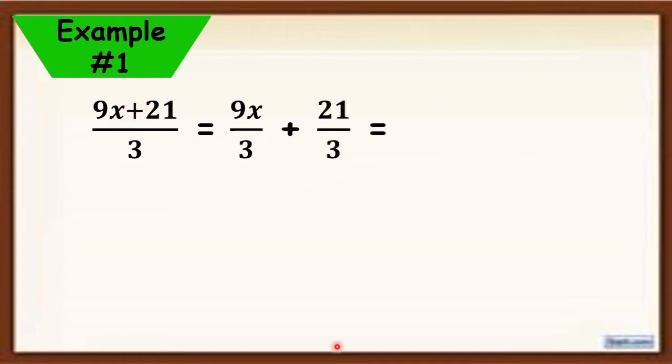Now, simplify. 9x divided by 3 is equal to 3x, because 9 divided by 3 is 3, then copy x. Plus, 21 divided by 3 is equal to 7. So, the final answer is 3x plus 7.